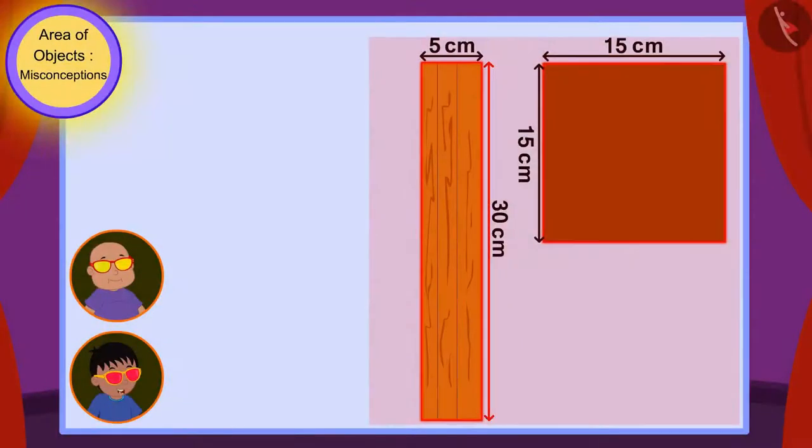The length of the longest side of the rectangular table, 30 cm, is much more than the length of the square-shaped table's edge, 15 cm. That means the rectangle-shaped table is much larger than the square-shaped table.